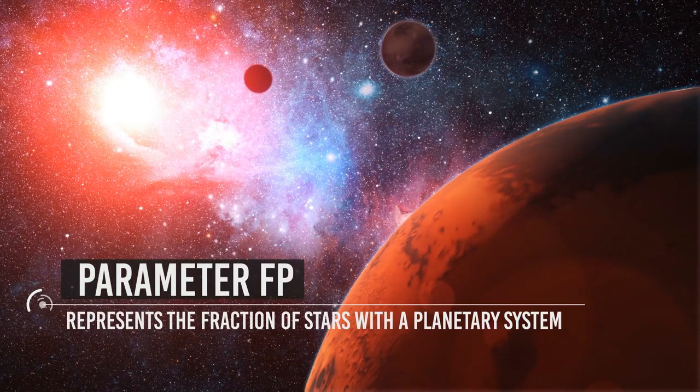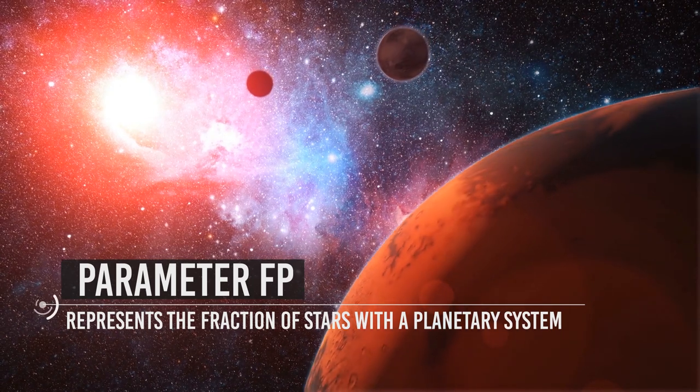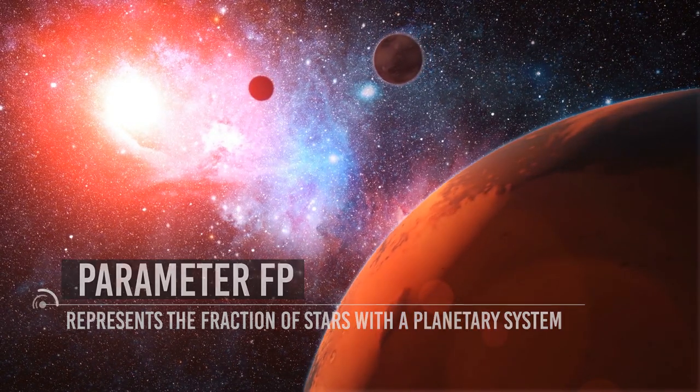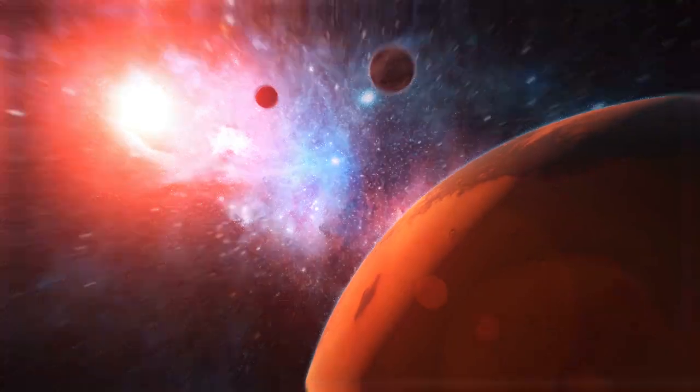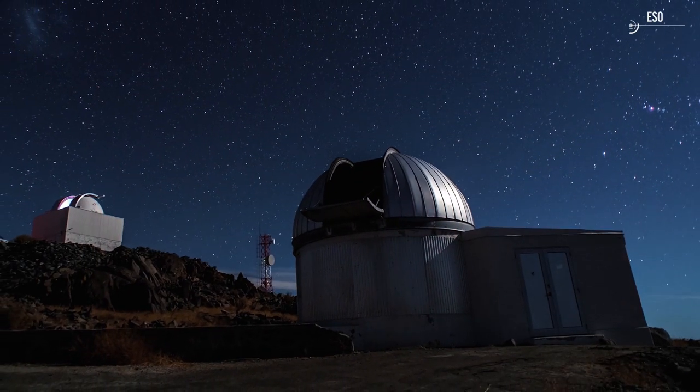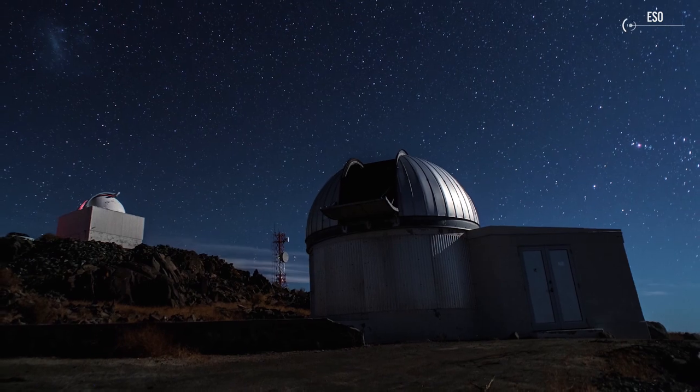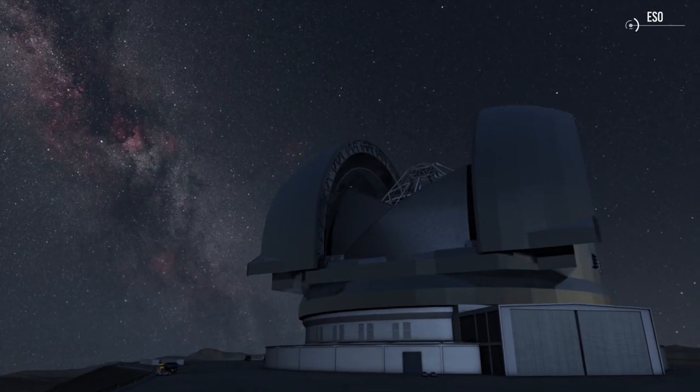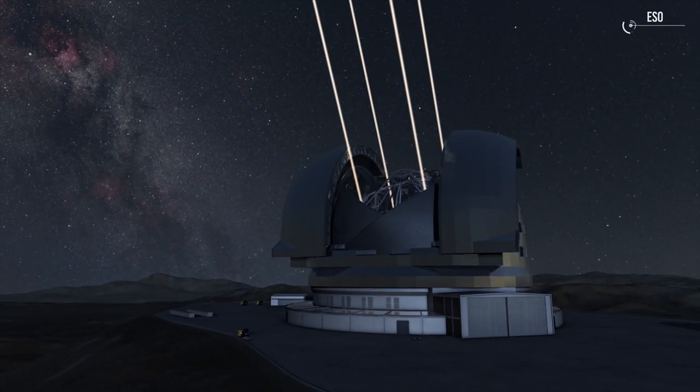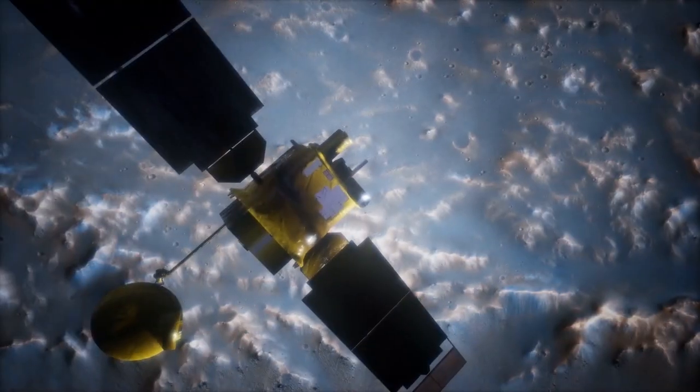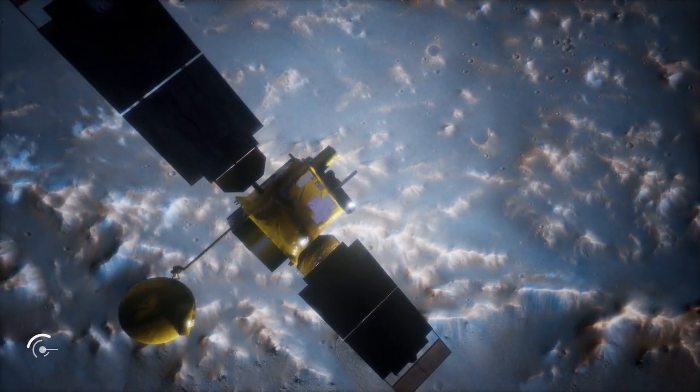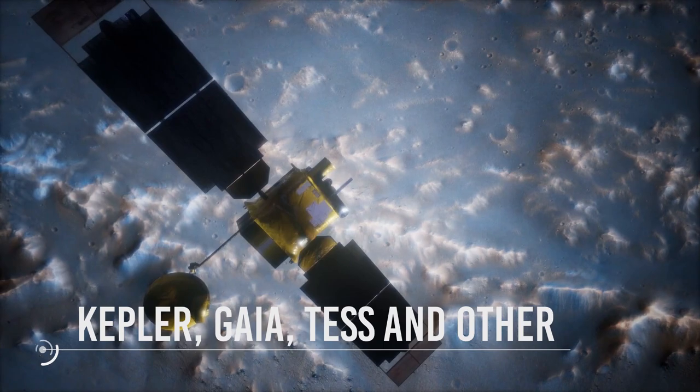Fp represents the fraction of stars with a planetary system. This term is subject to continuous revisions by astronomers who, thanks to the considerable boosts given by new technologies, in recent years are finding more and more unequivocal evidence of the presence of planets around many of the stars examined, thanks to missions such as the satellites Kepler, Gaia, TESS and other similar missions.